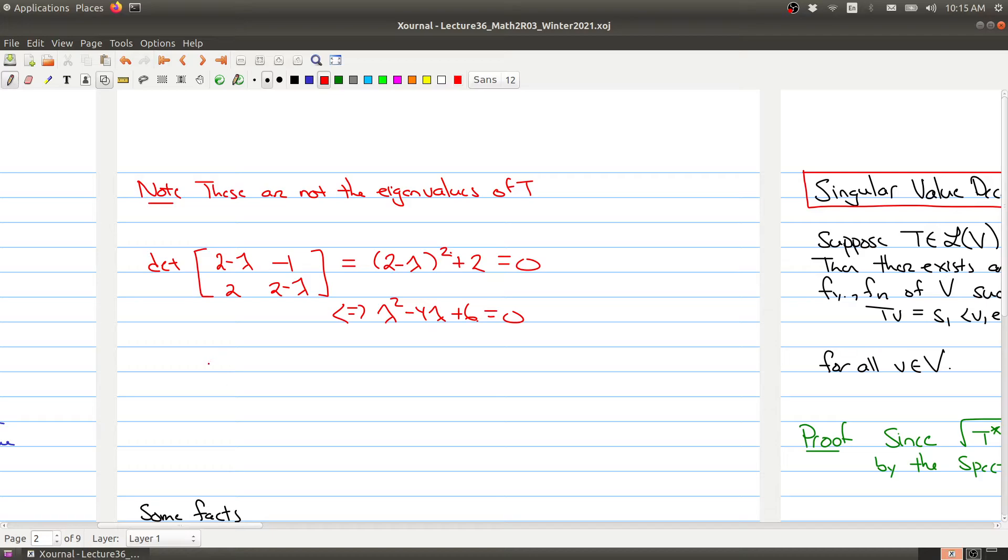Then you can use the quadratic formula, and you can solve this. So this is 4 plus or minus the square root of minus 4 squared minus 4 times 6 over 2. So we get 4 plus or minus 16 minus 24 over 2. And if you do all the simplification, you get 2 plus or minus root 2 times i.